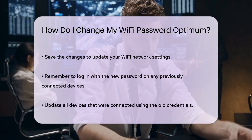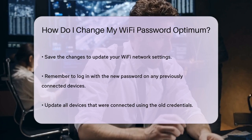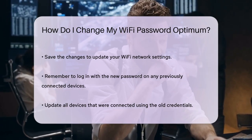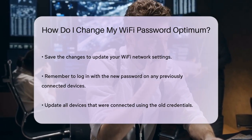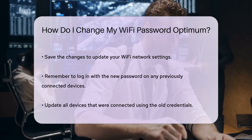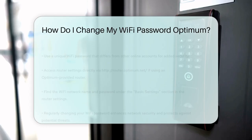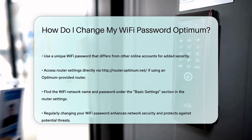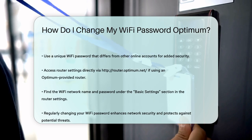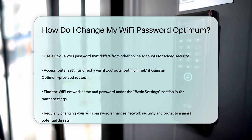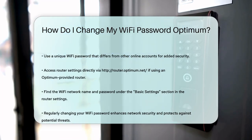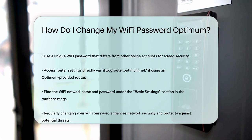If you're using the router provided by Optimum, you can also access the router settings directly by going to watch-router.optimum.netch and logging in with your Optimum ID and password. Here, you can find your Wi-Fi network name and password under the Basic Settings section, and you can edit and save the new password from there.